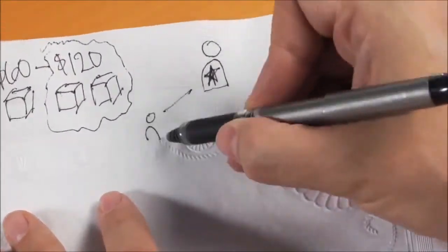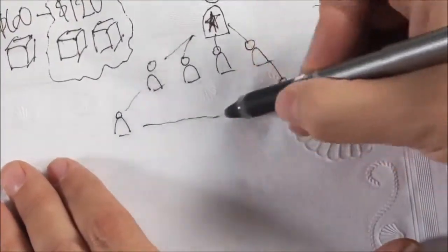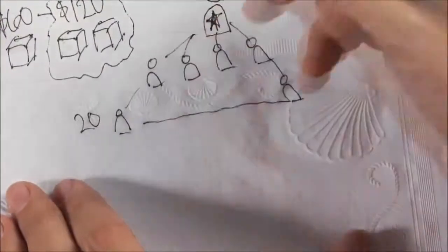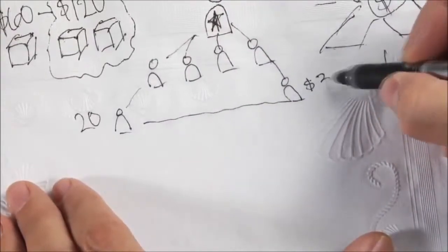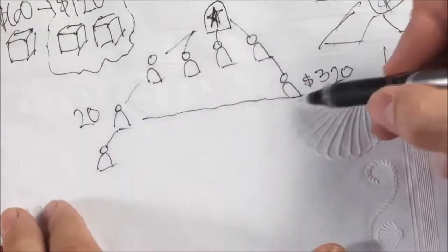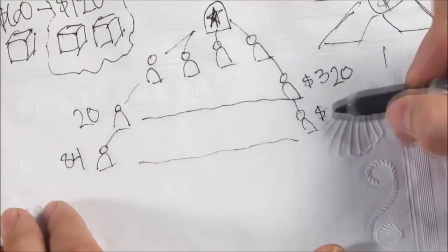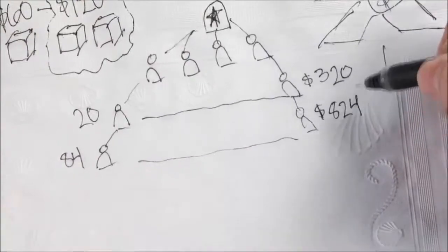We start with you and your four people. When they enroll their four, you'll have a total of 20 people, which can create potential earnings of $320 weekly. When your team duplicates again, you'll have 84 people generating potential earnings of up to $824 per week.